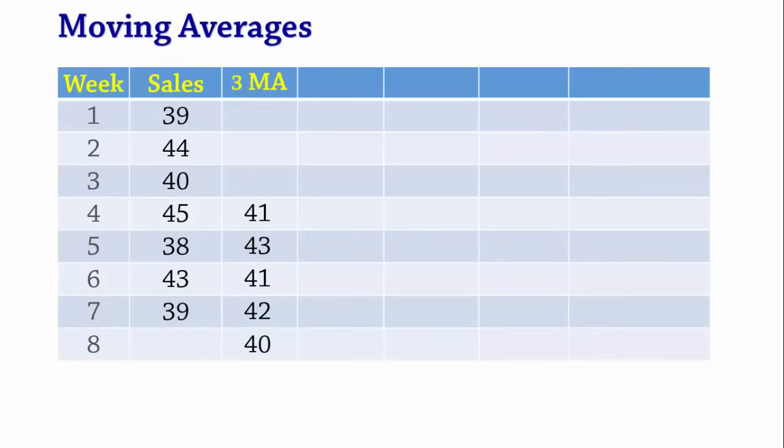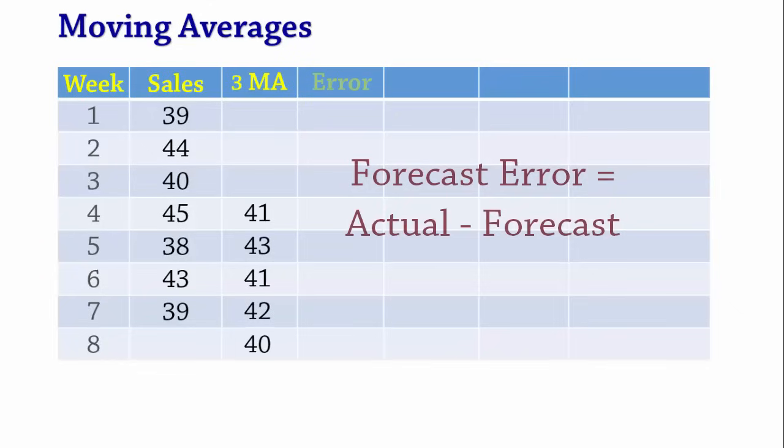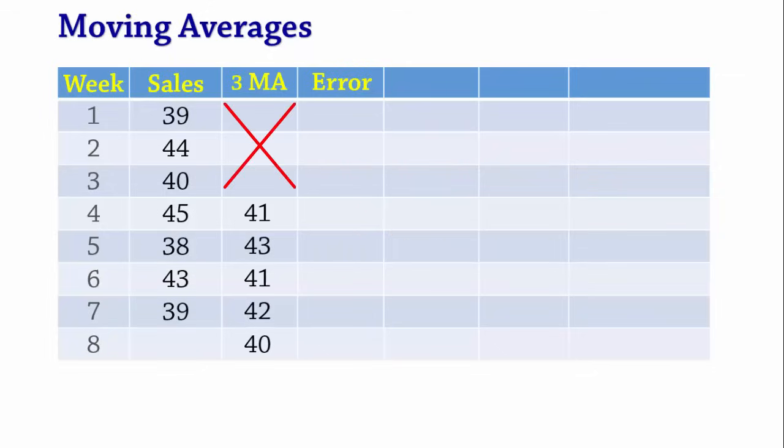Next, we calculate the forecast errors. Forecast errors are calculated as actual values minus corresponding forecast values. Since weeks 1 to 3 have no forecast values, we begin calculating errors in week 4. Thus, week 4 error is 45 minus 41 which equals 4.